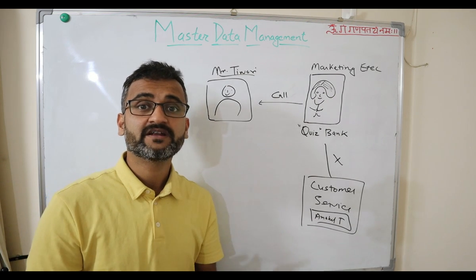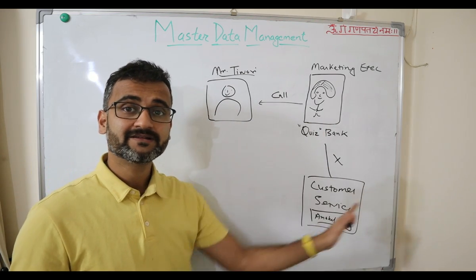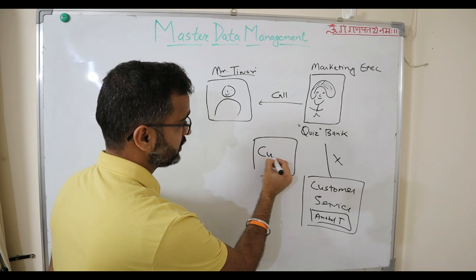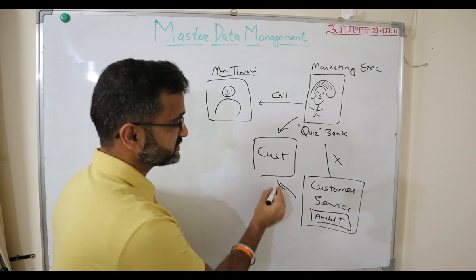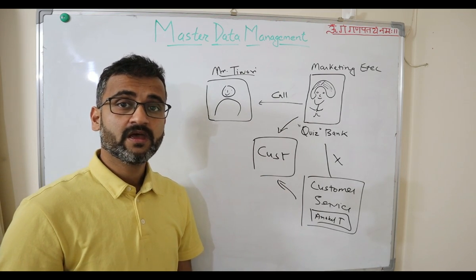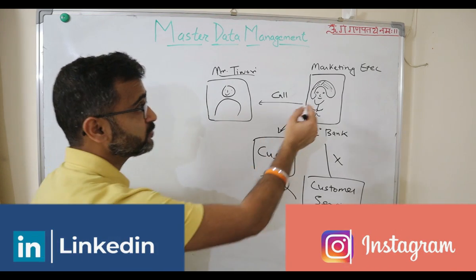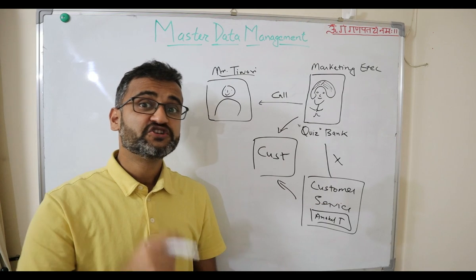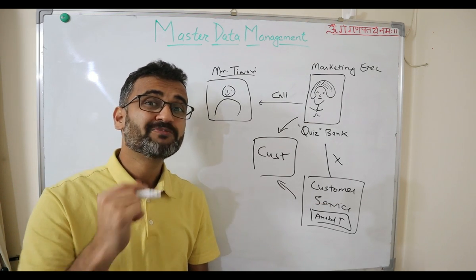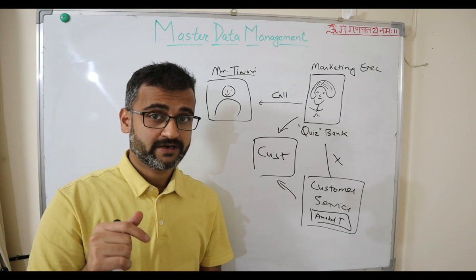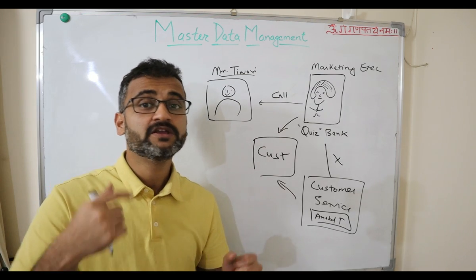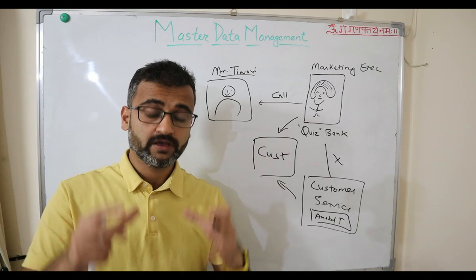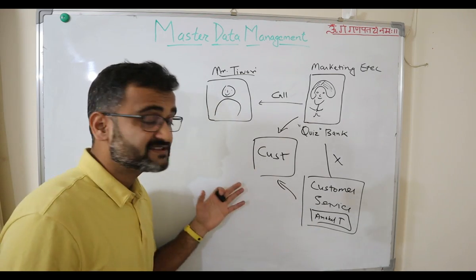This is where master data management would be very handy. Instead of having separate data silos, if there had been a common central place where the customer entity was managed, both the marketing team and the customer service team could refer to the same customer data. This would have enabled the marketing exec to know I was an existing customer — so instead of offering me a new credit card, she could have upsold me with an increased credit limit or cross-sold a different product. You can understand the business impact when data is not centrally defined and uniformly maintained across enterprise systems.